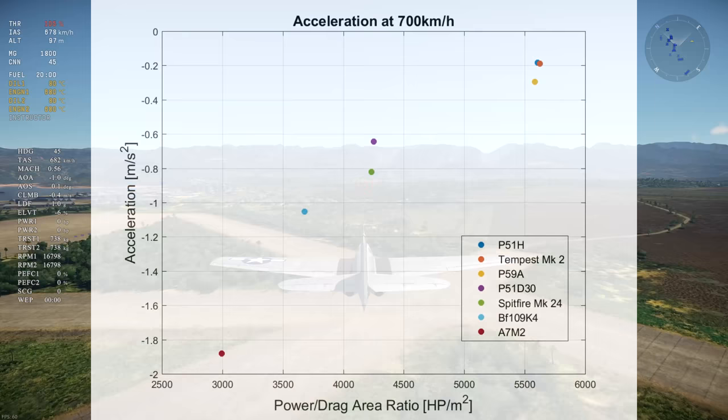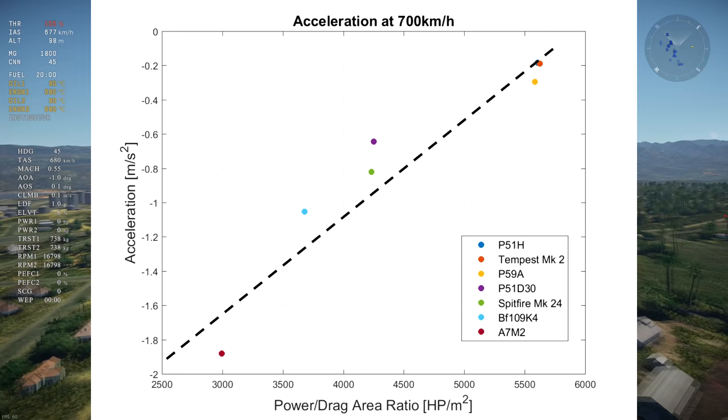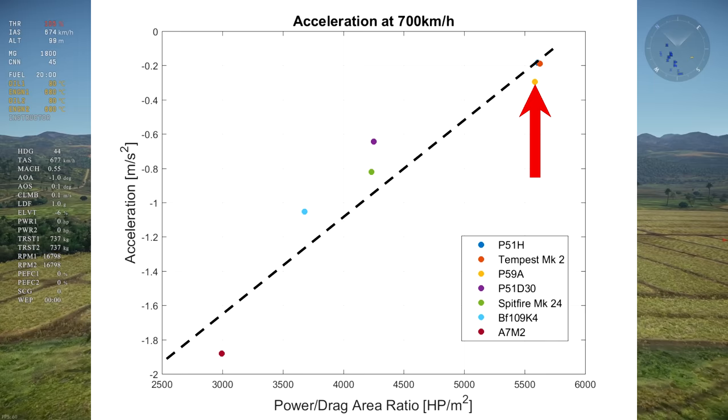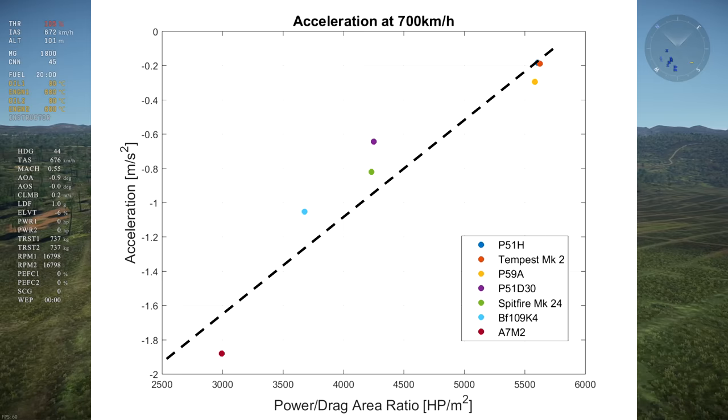By replacing power by the power to drag area ratio, we get a very tight distribution and a very good correlation with acceleration. And all of the aircraft including the P-59 are in a straight line. The high power at high speed of the P-59's turbojets compensates for its high drag. You get one point for power but three points if you listed the power to drag ratio.